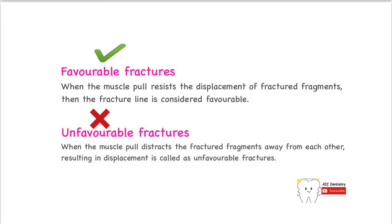These muscles exert certain actions on the fragments of the bone. Before a fracture, the bone functions as a single unit, but after impact the bone breaks into multiple pieces. Some muscles will prevent these fragments from spreading apart or displacing from their original position, while other muscles will tend to hold all the broken fragments together at one place.